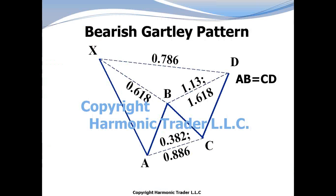The bearish Gartley pattern. This is a W type structure that possesses a 0.618 at the B point. That 0.618 retracement identifies this W structure and establishes the other measurements to define the completion point for the pattern. The 0.786 retracement of the XA leg converges with the equivalent AB equals CD pattern, with the 1.13 or as much as a 1.618 BC extension.